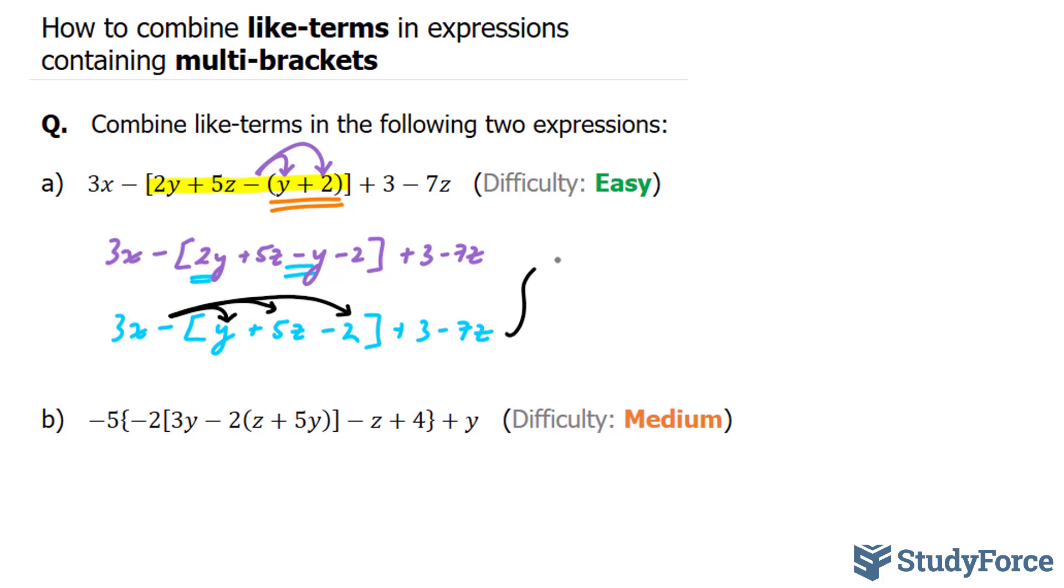And if you do this correctly, you should end up with this expression: 3x minus y minus 5z plus 2. Notice that this negative 2 and this negative made positive.